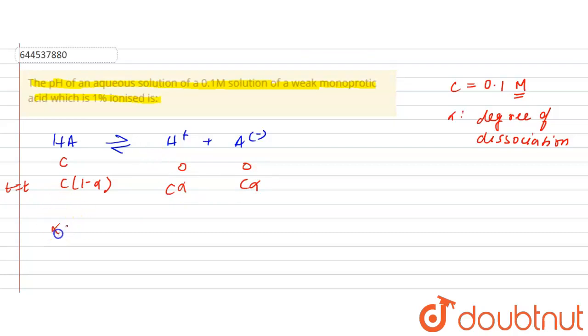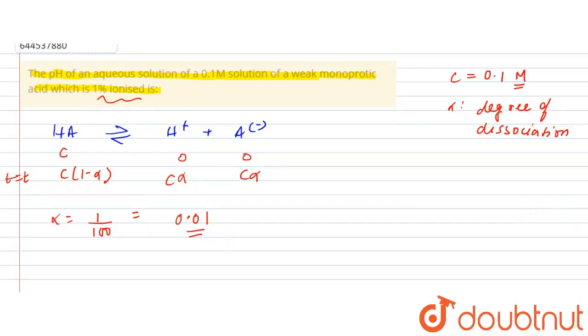It has been given to us that alpha equals 1 by 100, since it is given that 1% has been ionized. It means 0.01 is the value of alpha. So from here you can easily say that the concentration of H+ is equals to C times alpha, which is 0.1 into 0.01.